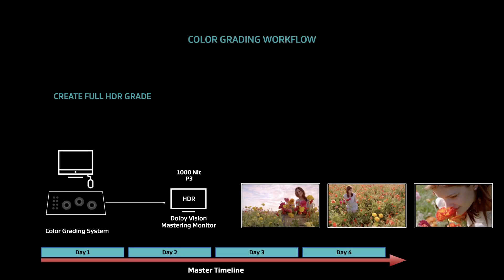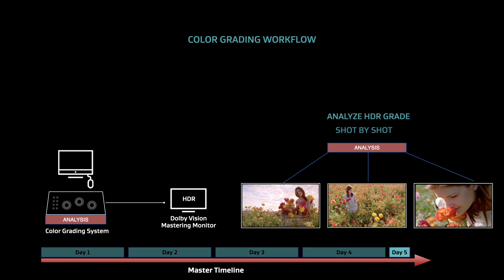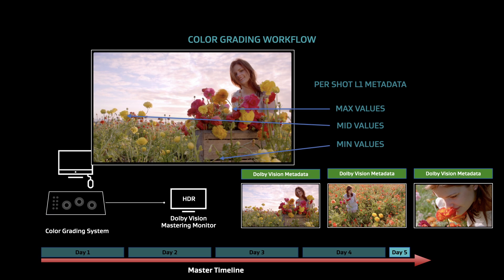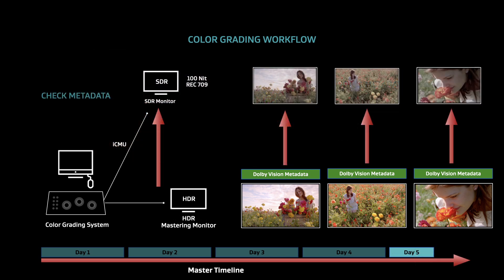Let's do a quick run-through of the process. The Dolby Vision workflow is recommended to start with creating the HDR master image first, typically done on a 1,000, 2,000, or 4,000-nit professional HDR mastering monitor, in PQ, with a P3 or Rec. 2020 color gamut. When the colorist is finished, the Dolby Vision metadata creation process begins by analyzing each of the individual shots. It's an automatic process and typically runs one-to-one for the program length for a UHD project. This generates three unique values per shot that describe the overall minimum, maximum, and average luminance.